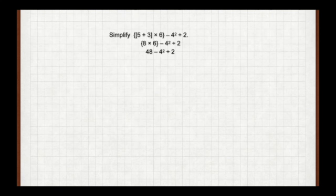We do 4 squared first — remember, that's not 4 times 2, it's 4 times 4 — so that's 16. Now we have 48 minus 16 divided by 2. We have a minus and a division, so we do the division: 16 divided by 2 is 8. That gives us 48 minus 8, which is 40.